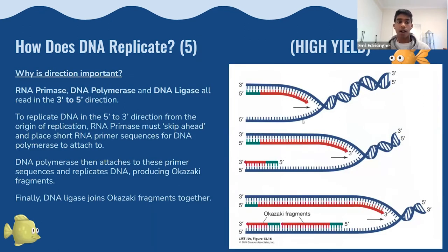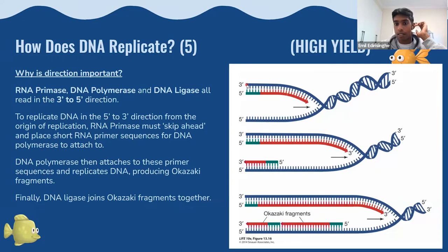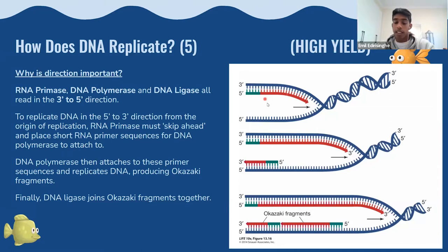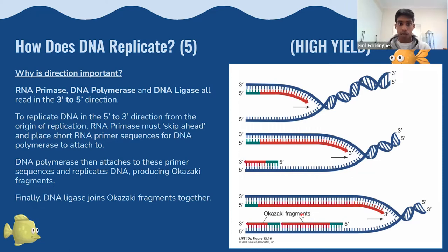RNA primase, DNA polymerase, and DNA ligase all move in the three prime to five prime direction. The original leading strand is a three prime strand, so DNA polymerase can keep going and replicate this strand continuously. However, on the lagging strand — which is the five prime end — RNA polymerase has to keep jumping and making Okazaki fragments. That's why the direction of DNA synthesis is critically important for these enzymes.